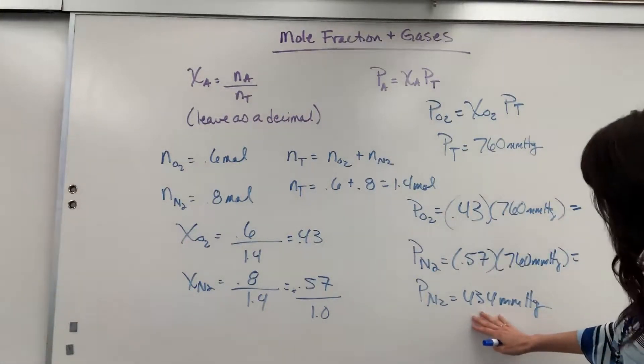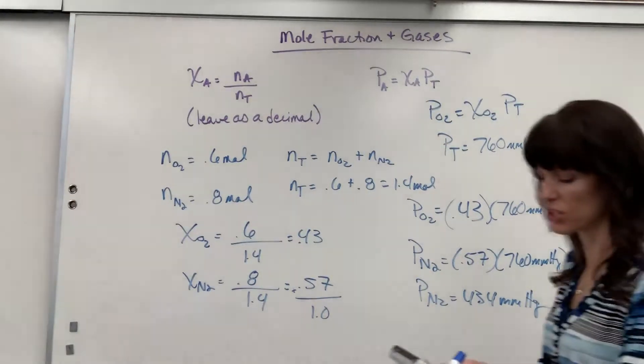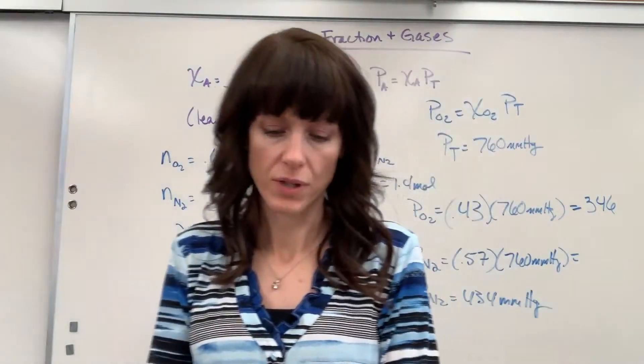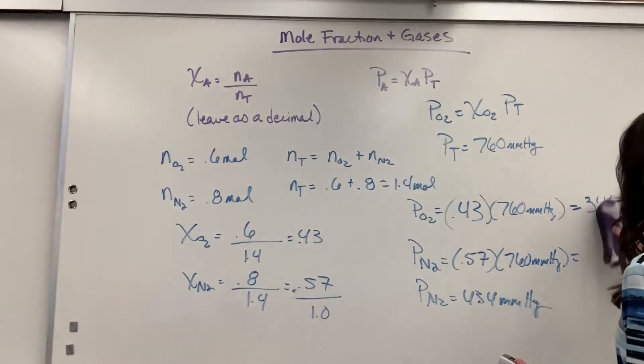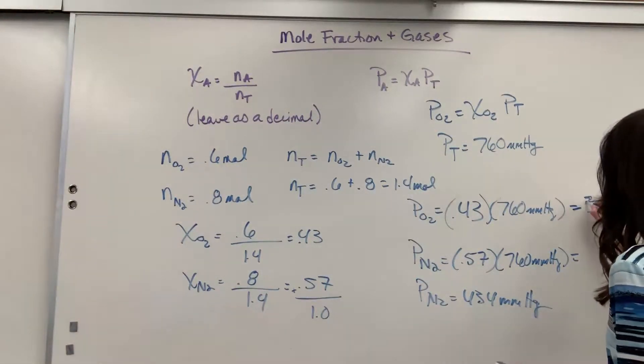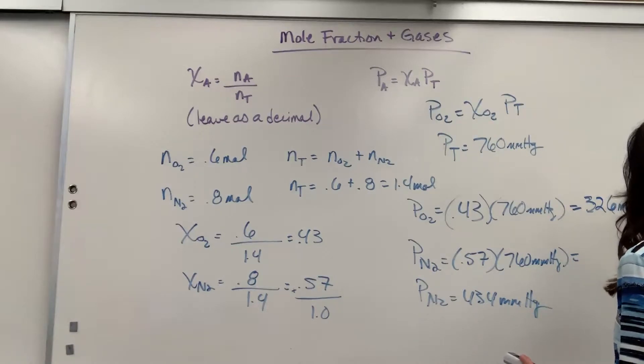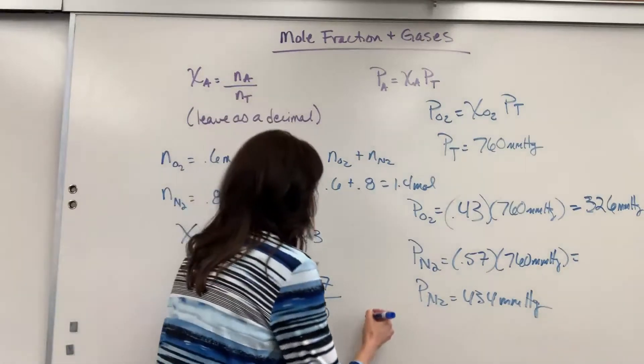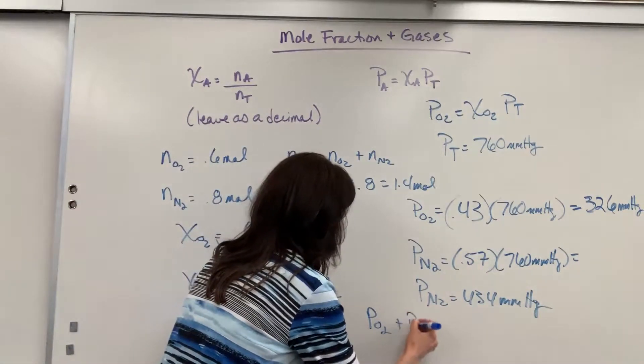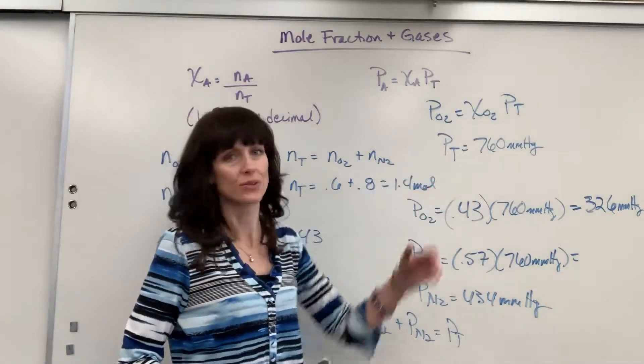That is going to be 346. 346. Should we check that? It's 346. Make sure I did my math right. Oh, it's off my tube. 326, sorry about that. 326 millimeters of mercury. 326 plus 434. So partial pressure of oxygen plus partial pressure of nitrogen equals total pressure equals 760.